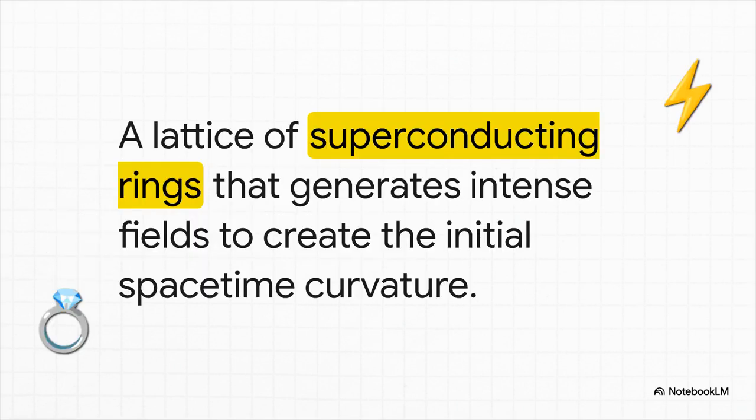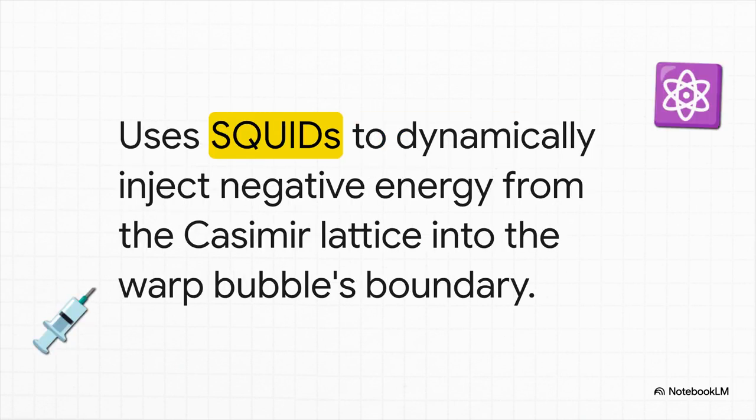Let's dig into each one. First up is the gravitational field coupler, or GFC. You can think of this as the muscle of the operation. We're talking about a whole lattice of superconducting rings, and they're pumping over a million amps of current through them. This creates an absolutely colossal magnetic field, one so powerful it can literally create the first dent in space-time. This is the seed that starts the whole warp bubble. Okay, so the GFC makes the dent. What's next?